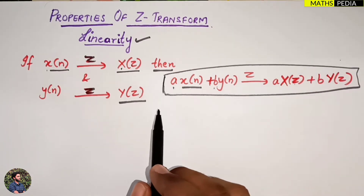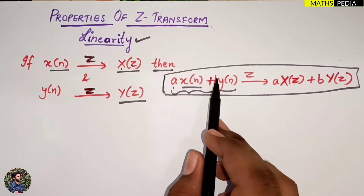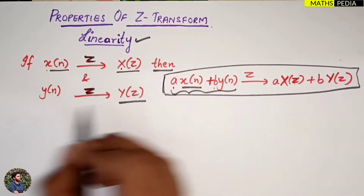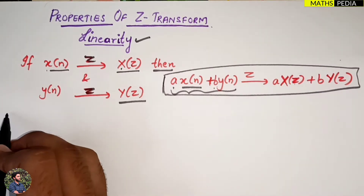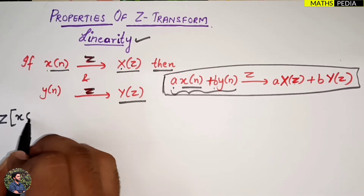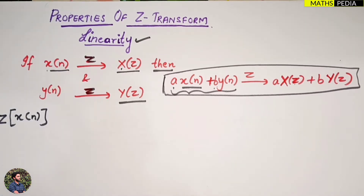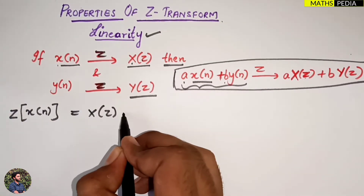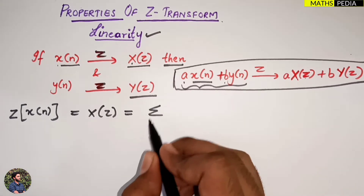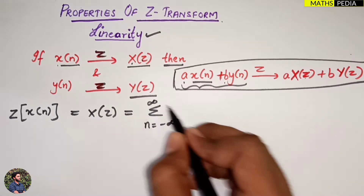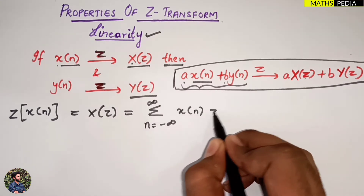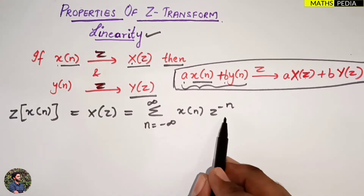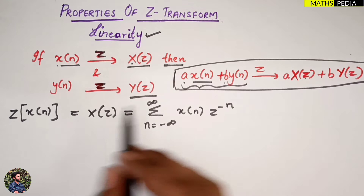We need to prove this, so we take the LHS part, apply the Z transform, and show we get the RHS. The definition of Z transform of a signal x(n) is: X(z) equals summation from n equal to minus infinity to infinity of x(n) into z raised to the power minus n. This is the basic definition.